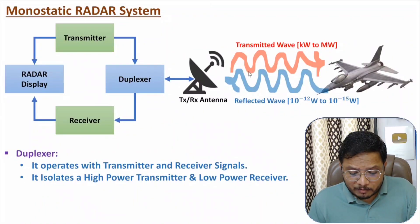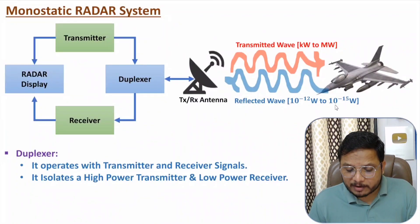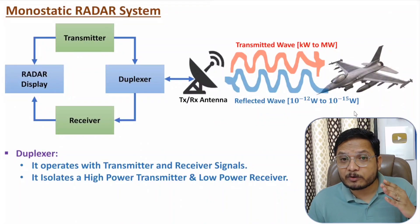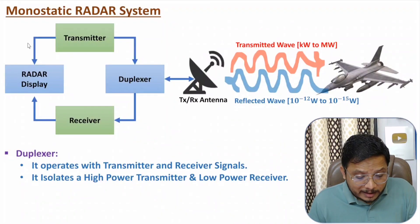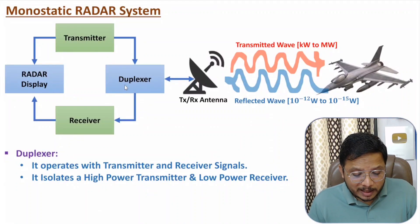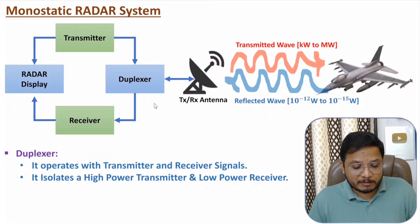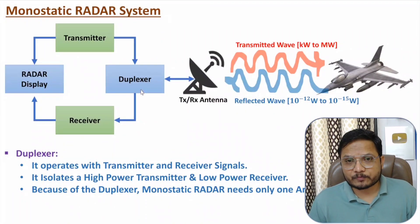The transmitted signal is at high power — in terms of kilo volts to mega volts — while the received echo signal from the object has very weak power, in terms of 10 to the power minus 12 to 10 to the power minus 15. We need to separate both of these signals, and that isolation job is done by the duplexer. Because of the duplexer, we can have only one antenna in the monostatic system.